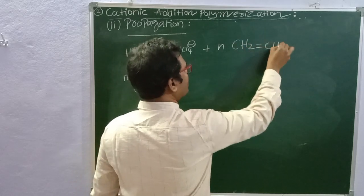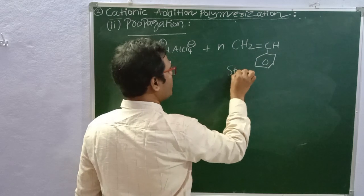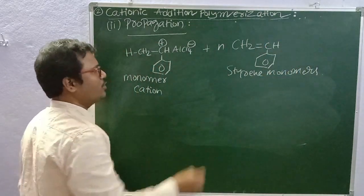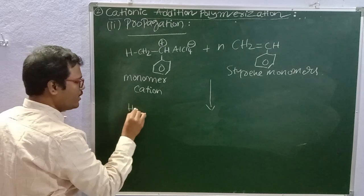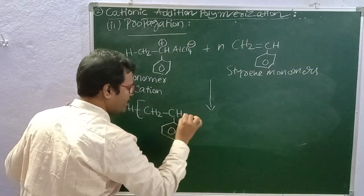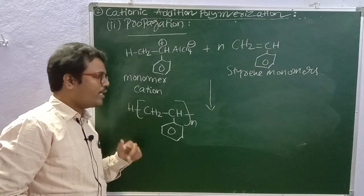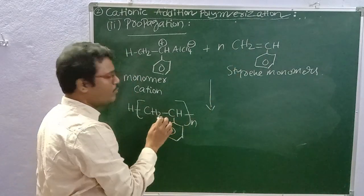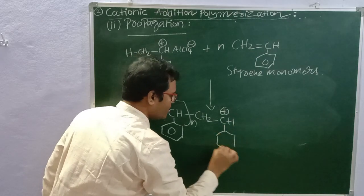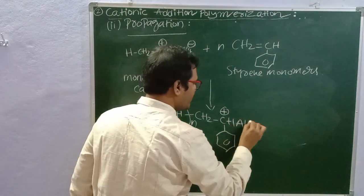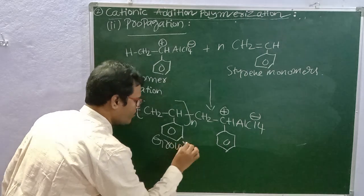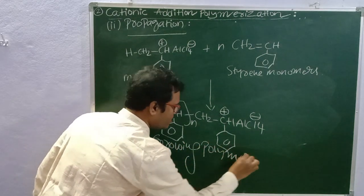N times styrene monomers undergo addition polymerization. The growing polymer chain can be written with a repeating unit: [CH2–CH(benzene ring)]n. The monomer has a double bond, but in the polymer it becomes a single bond. The result is written as CH2–CH⁺ polymer chain with AlCl4⁻ at the end — this is the growing polymer.